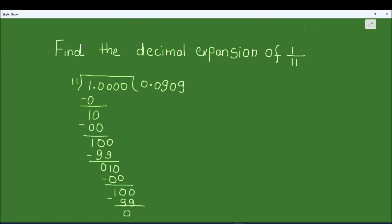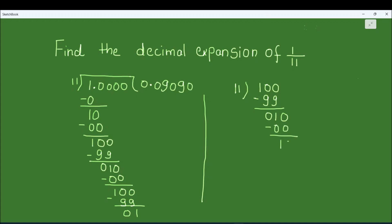100 minus 99 is 1, and the same step repeats. Since we already have a decimal, we can add as many zeros as we want. 1 is not divisible by 11, so we put 0; 11 times 0 is 0, giving 10. Drop another 0 to get 100; 11 times 9 is 99, remainder 1. We see the decimal expansion is 0.090909...